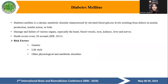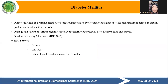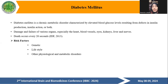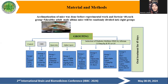Diabetes mellitus is a chronic metabolic disorder characterized by elevated blood glucose levels resulting from a defect in insulin production, insulin action, or both. It causes damage and failure of various organs, especially the heart, blood vessels, eyes, kidneys, liver, and nerves. Death occurs every 20 seconds. Risk factors include genetics, lifestyle, and other physiological and metabolic disorders.